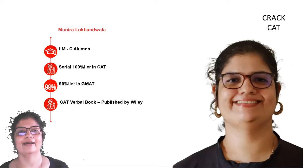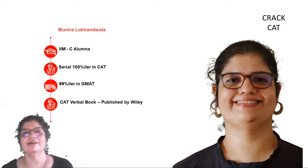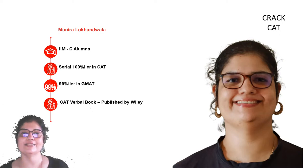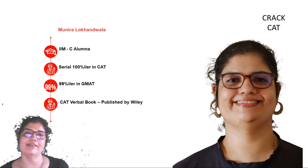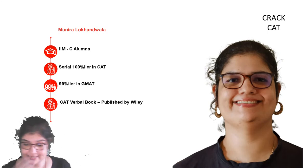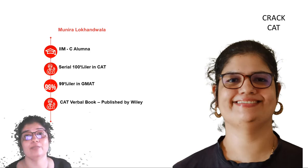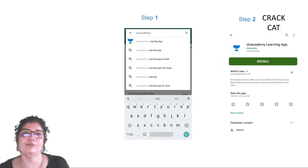I'm Munira Lokhanwala and I'm a Calcutta alumna, a serial 100 percentiler in CAT and a 99 percentiler in GMAT. I also have a CAT verbal book published by Wiley and available on Amazon. Besides the Unacademy YouTube live channels, you can also find me on the Unacademy app.